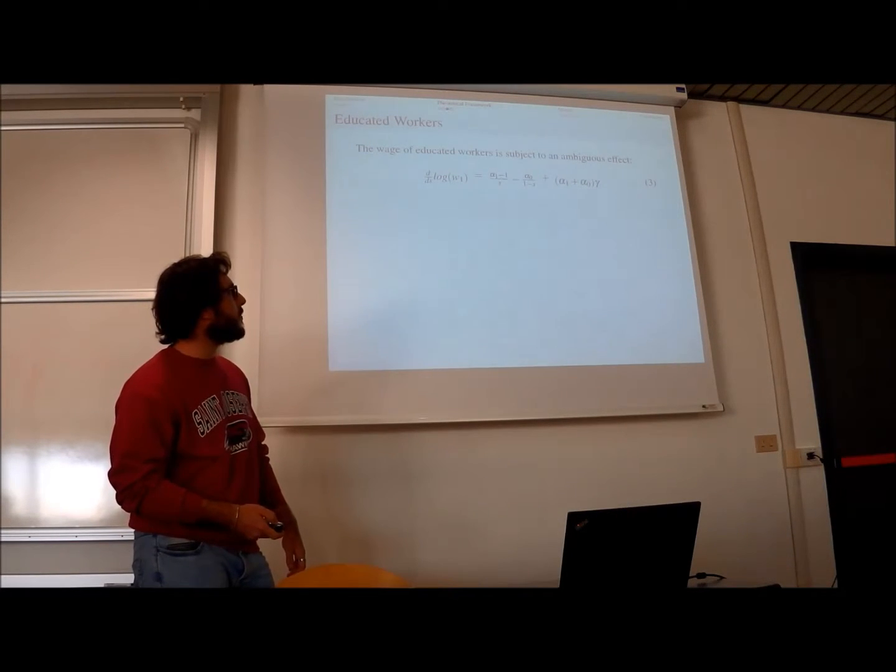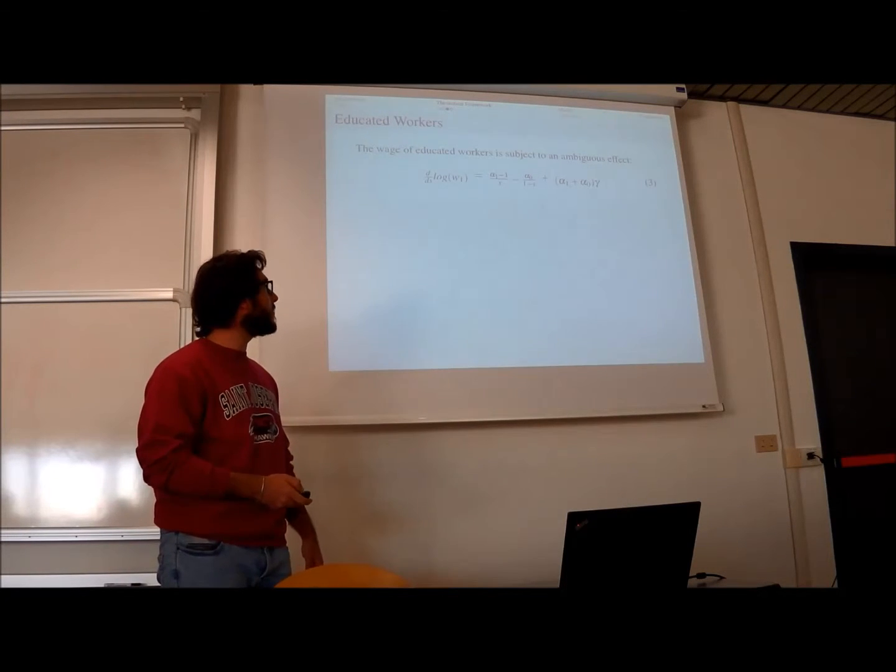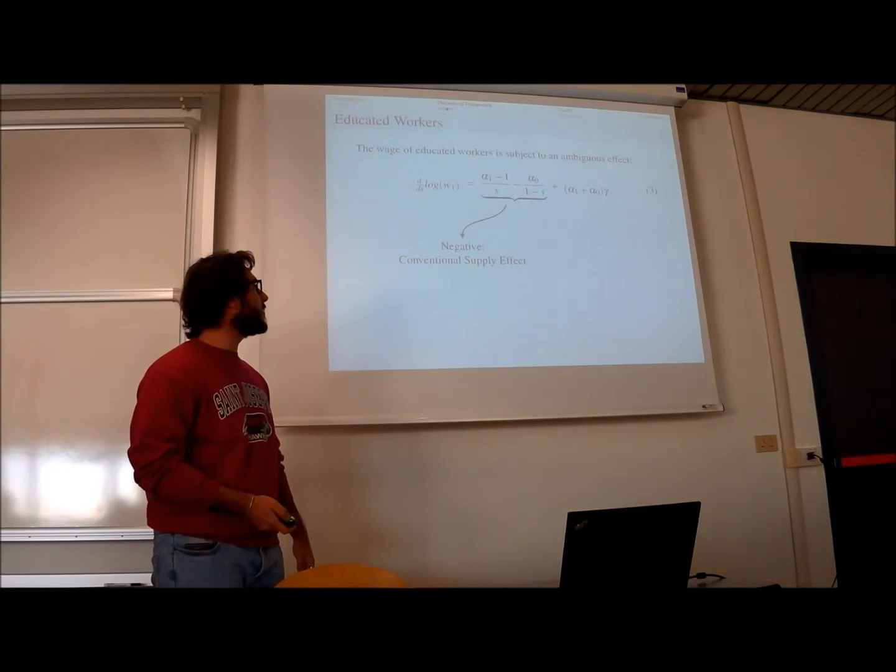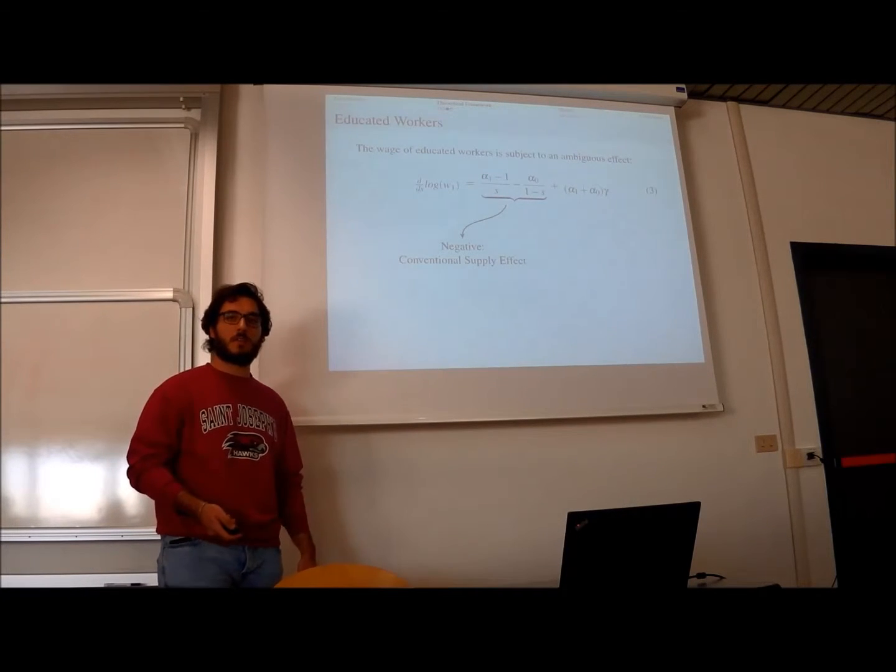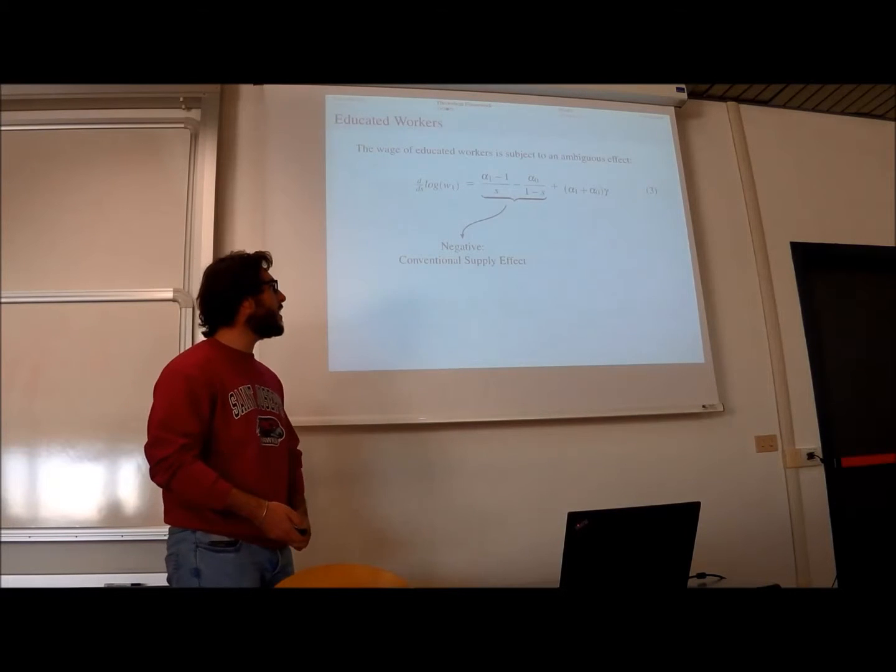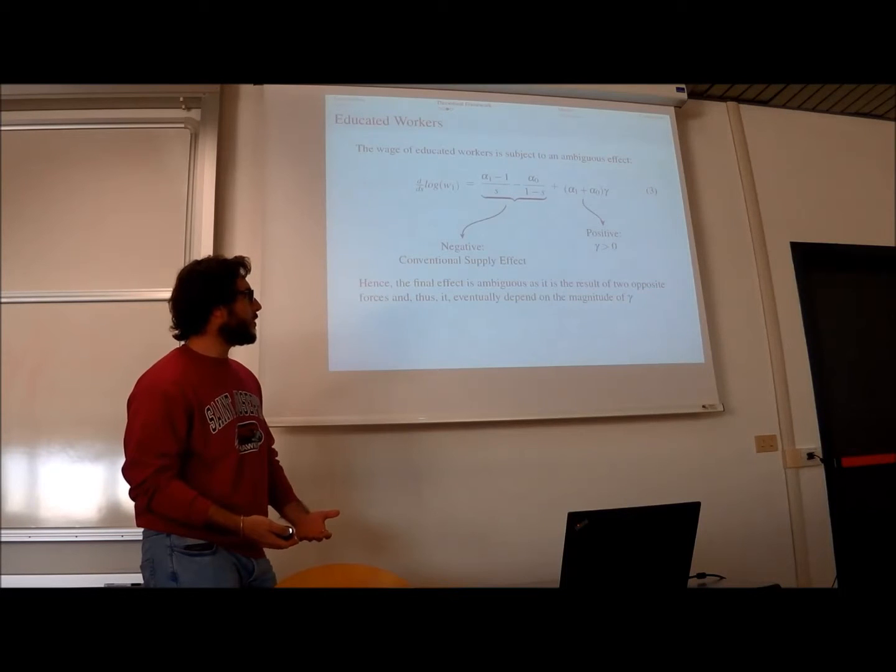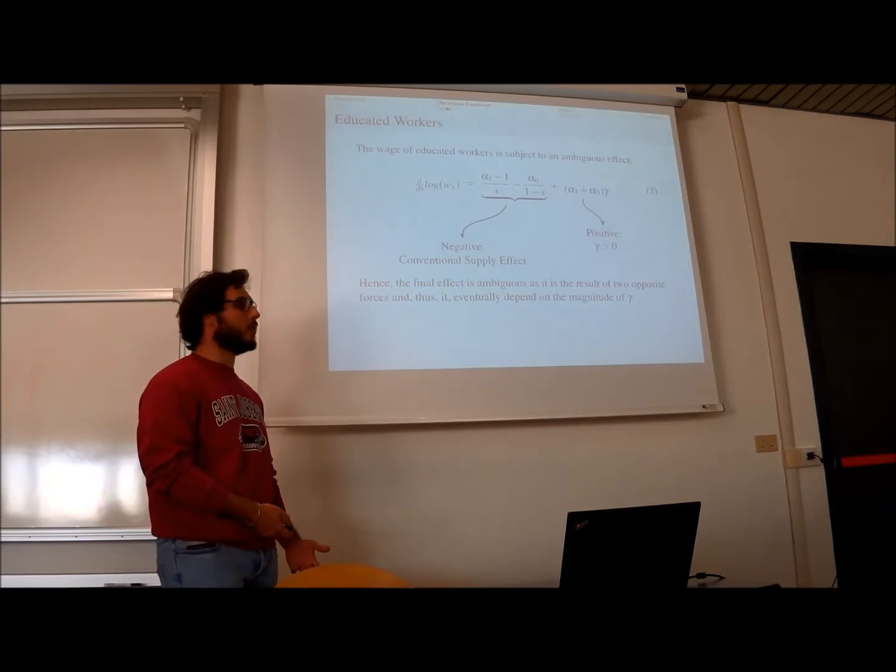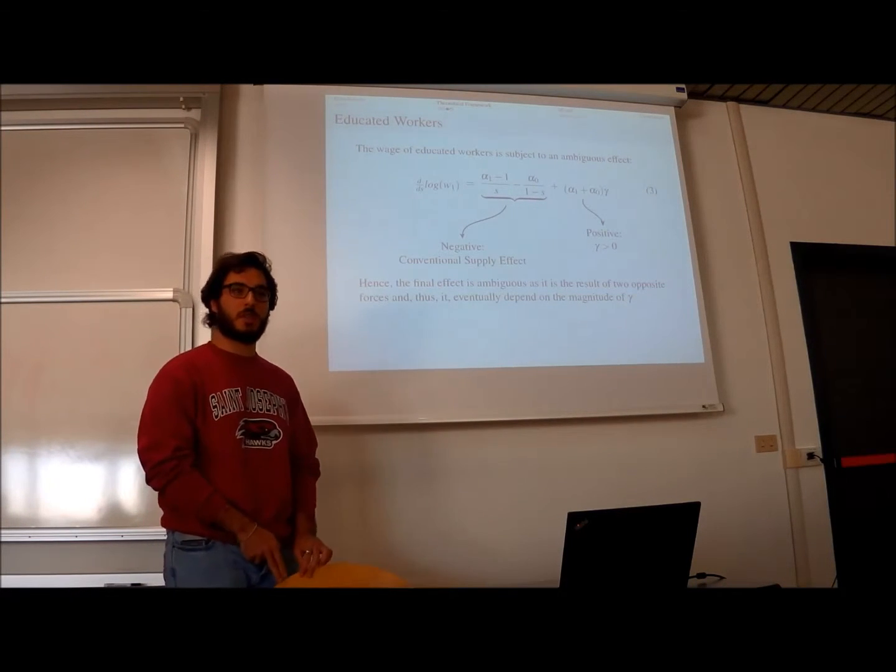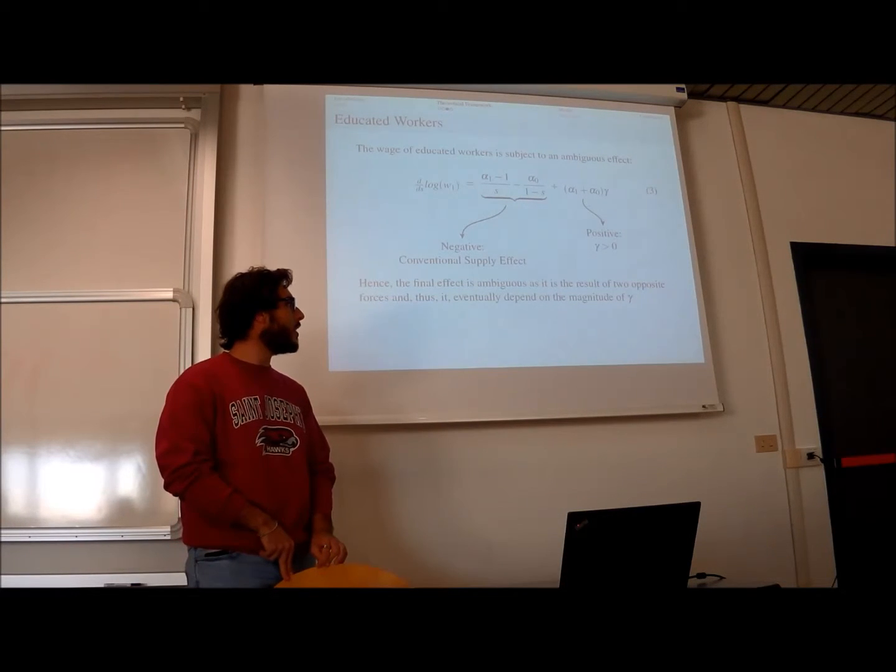For educated workers, the model suggests an ambiguous effect overall. We have a first negative effect due to the conventional supply effect—the higher the quantity, the lower the value. Then we have again a positive effect due to the spillover. So for educated workers to have a positive effect on wages, the magnitude of the spillover must be large enough to offset the negative effect.